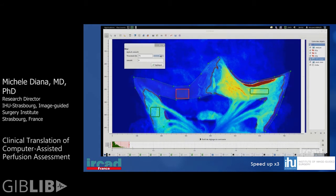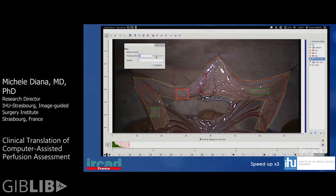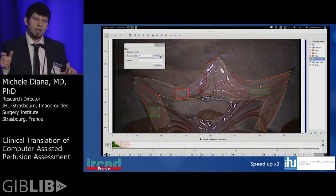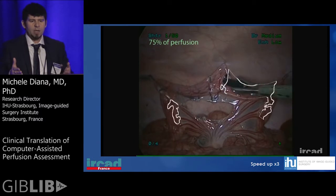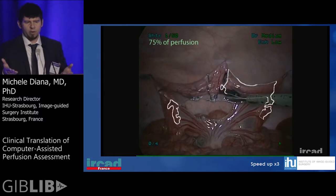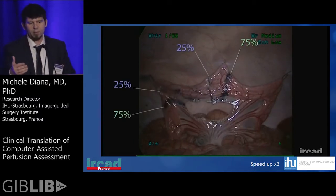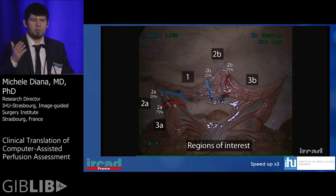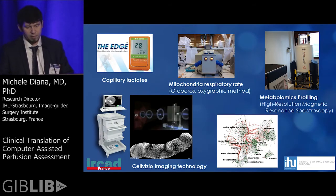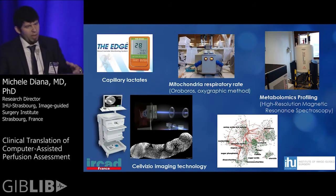Then you apply some ROIs, you segment, and after you place the references, it will display where you have to actually make the resection. Here we are identifying where the bowel was perfused — for example at 25 percent, where it was perfused at 75 percent — and we did anastomosis in both ways and saw the results.